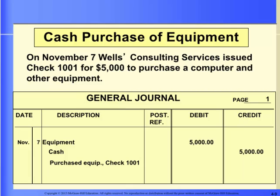On November 7, Wells Consulting Services issued check 1001 for $5,000 to purchase a computer and other equipment. Equipment needs to be debited for $5,000 and cash needs to be credited for $5,000. Here is the general journal entry.